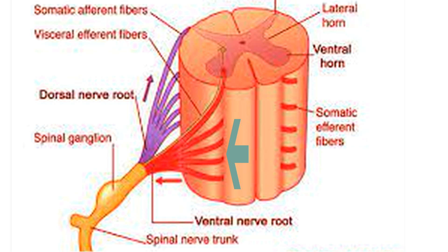So till here we are clear that these are efferent fibers, these are motor fibers, and these are ventral fibers. Ventral also means anterior, so these are anterior fibers. Now, if they are fibers, they must be fibers of some neurons, and in the case of motor neurons, there are upper motor neurons and lower motor neurons.